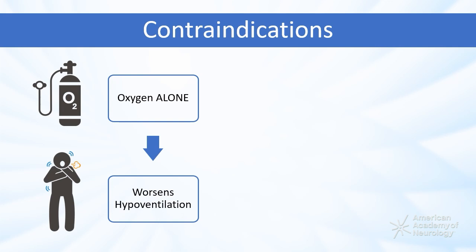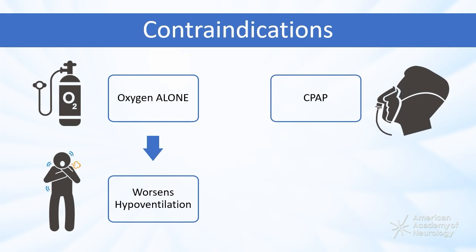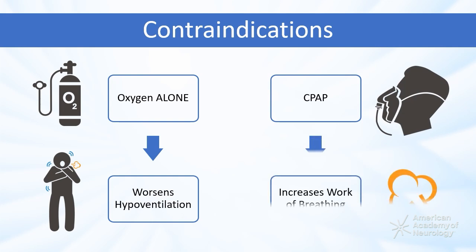Continuous positive airway pressure, CPAP, is also relatively contraindicated in neuromuscular disorders. It provides the same level of pressure during inhalation and exhalation, which increases the work of breathing and could lead to worsened fatigue in weak muscles.